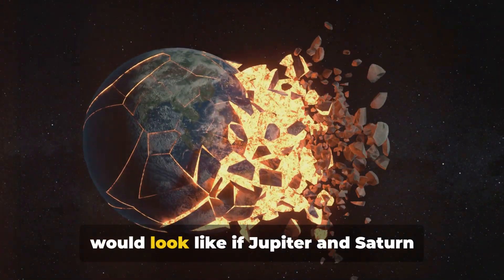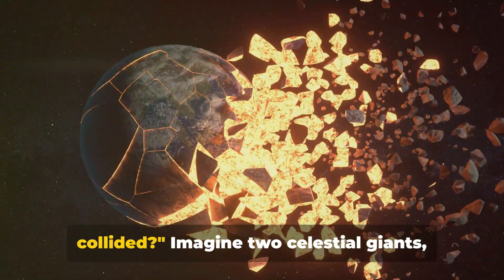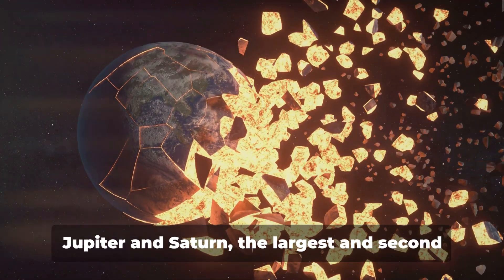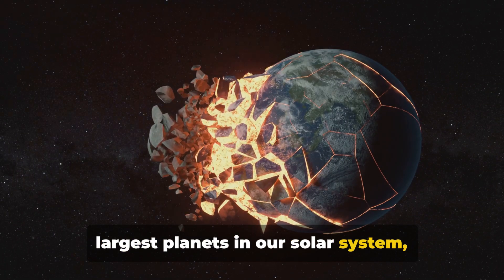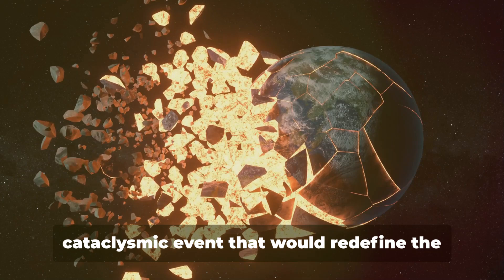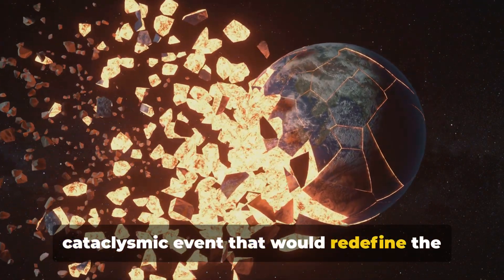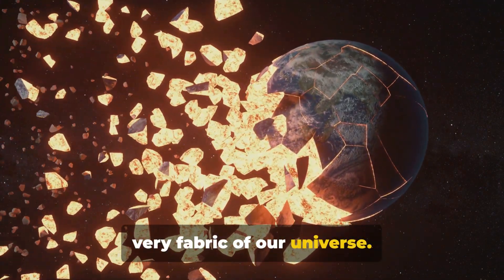Have you ever wondered what the universe would look like if Jupiter and Saturn collided? Imagine two celestial giants, Jupiter and Saturn, the largest and second-largest planets in our solar system careening towards each other in a cataclysmic event that would redefine the very fabric of our universe.